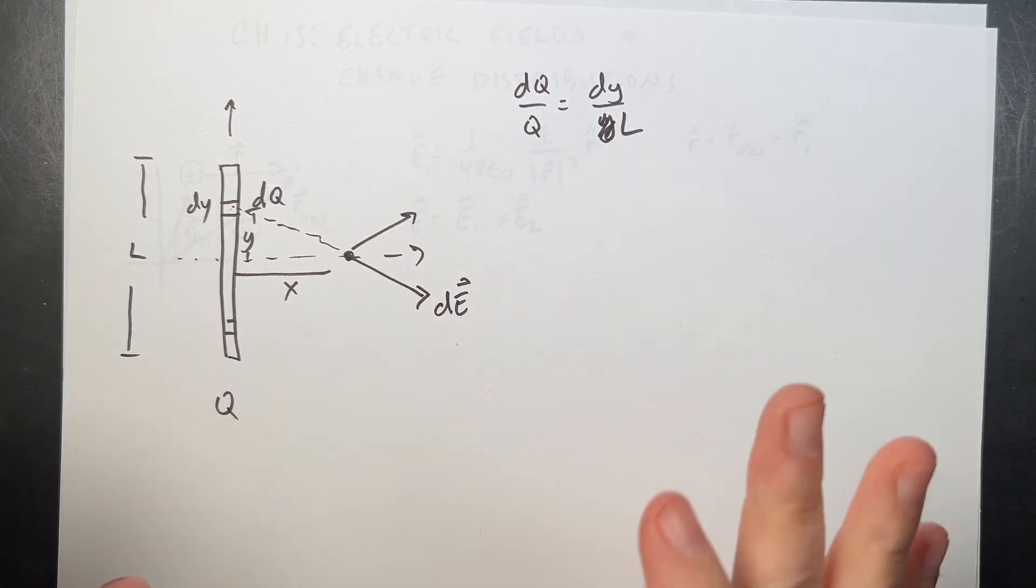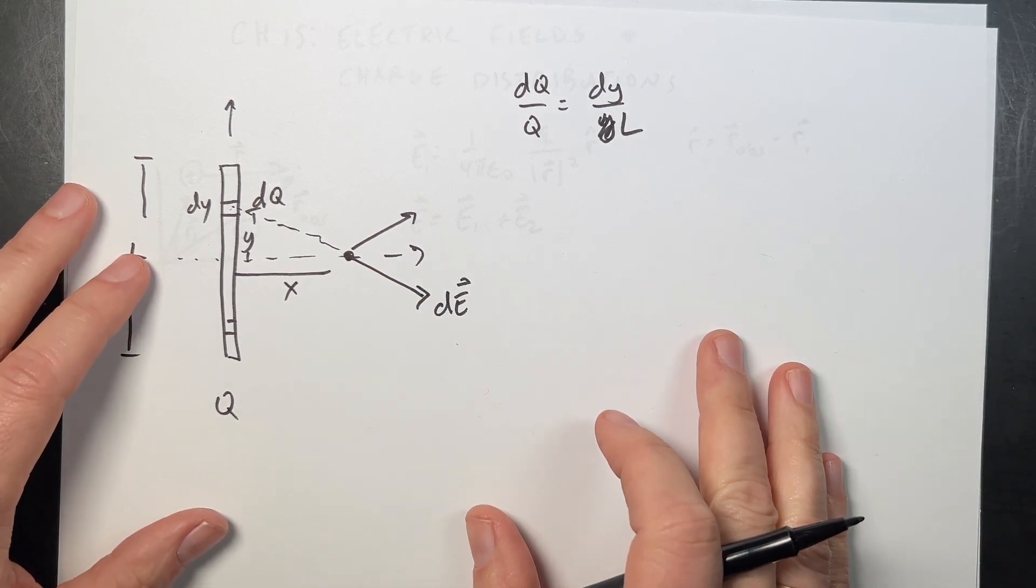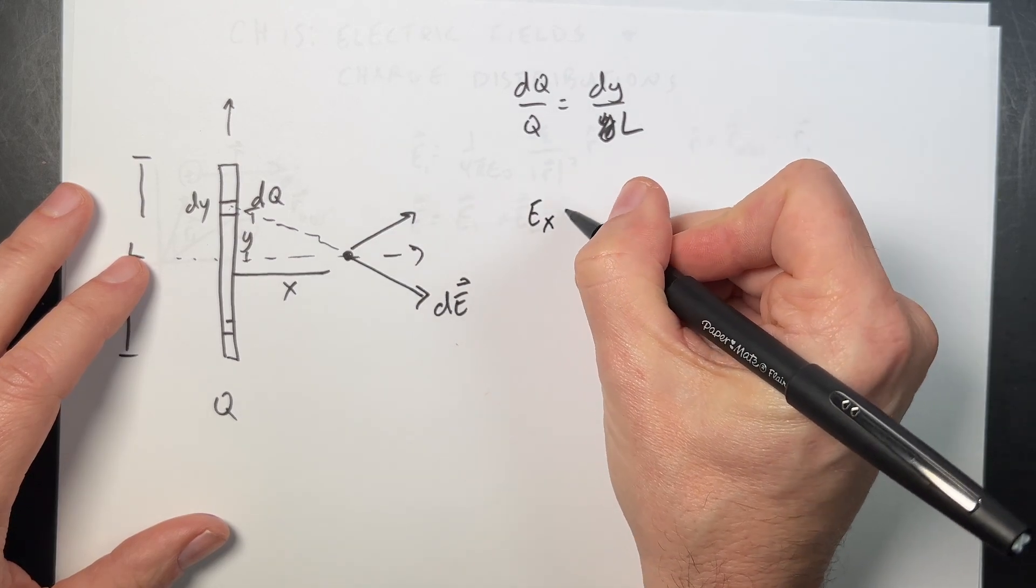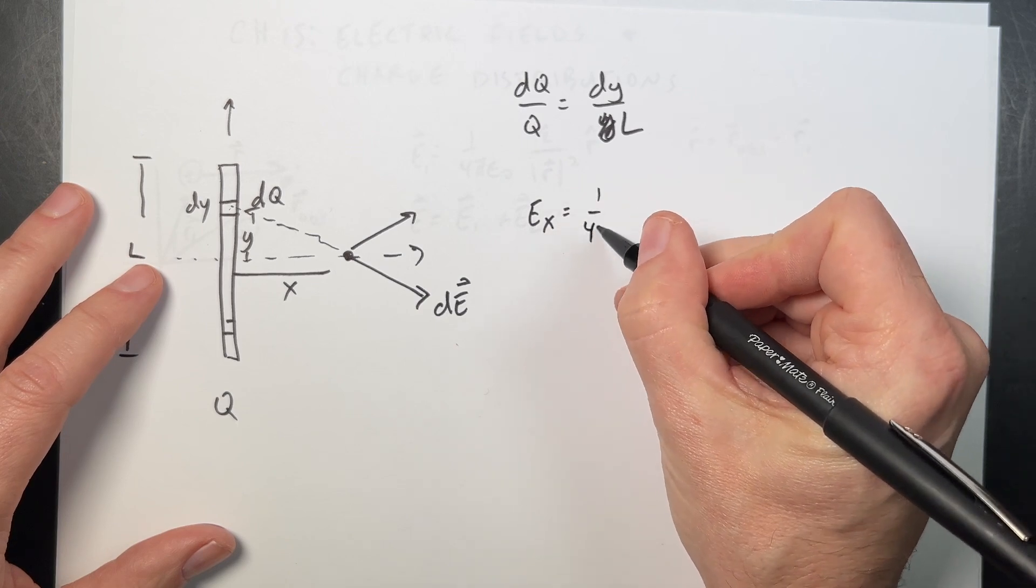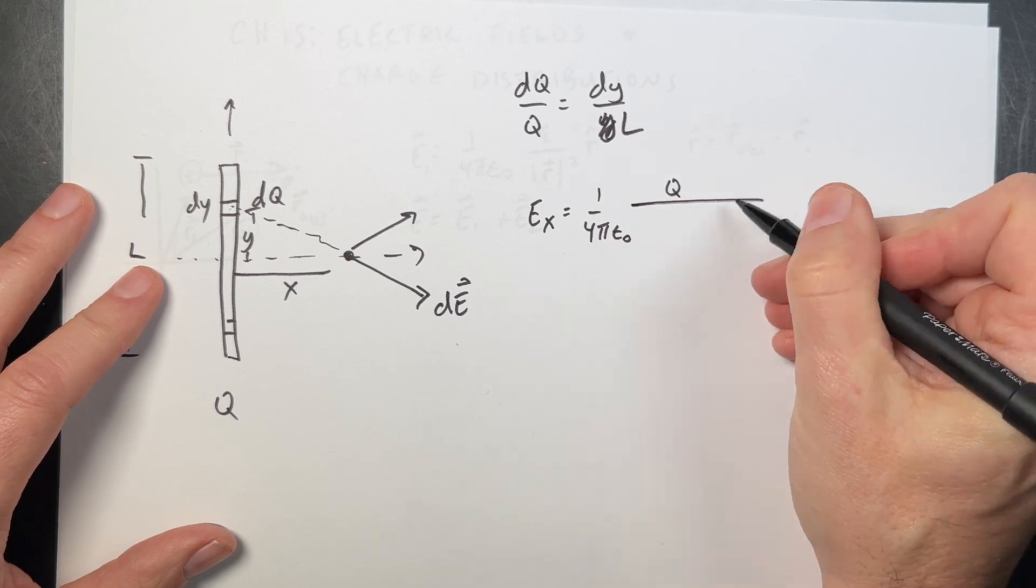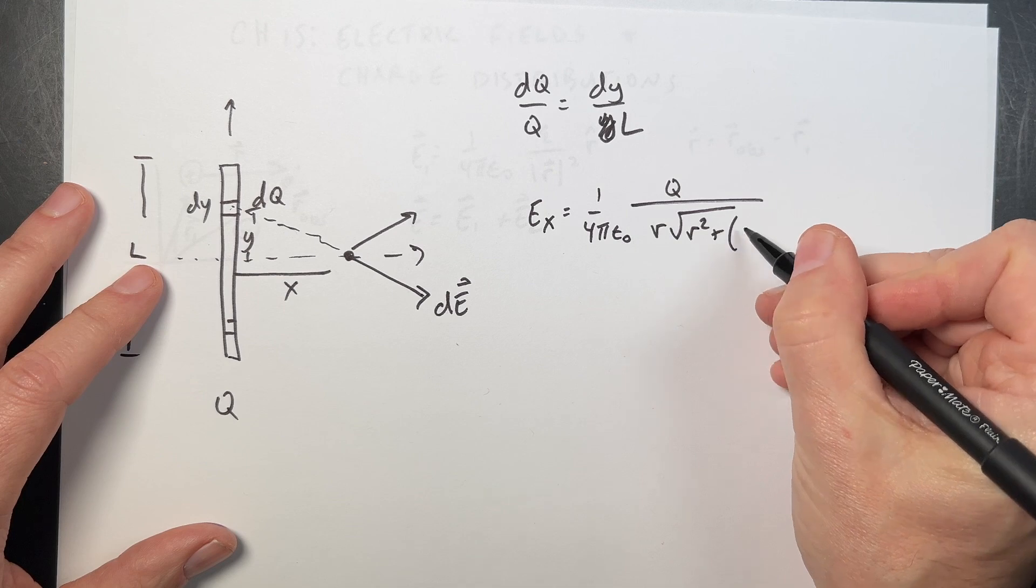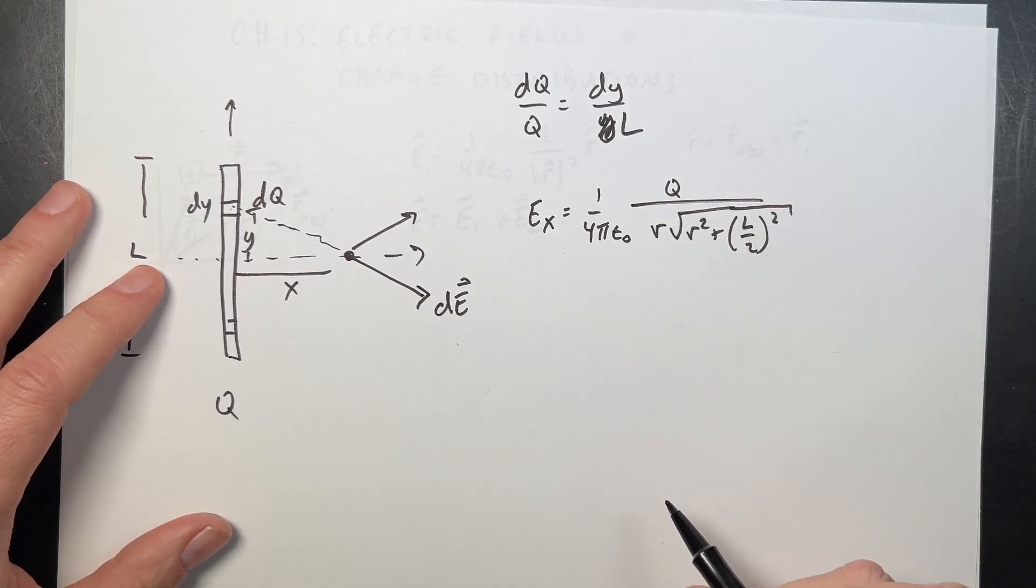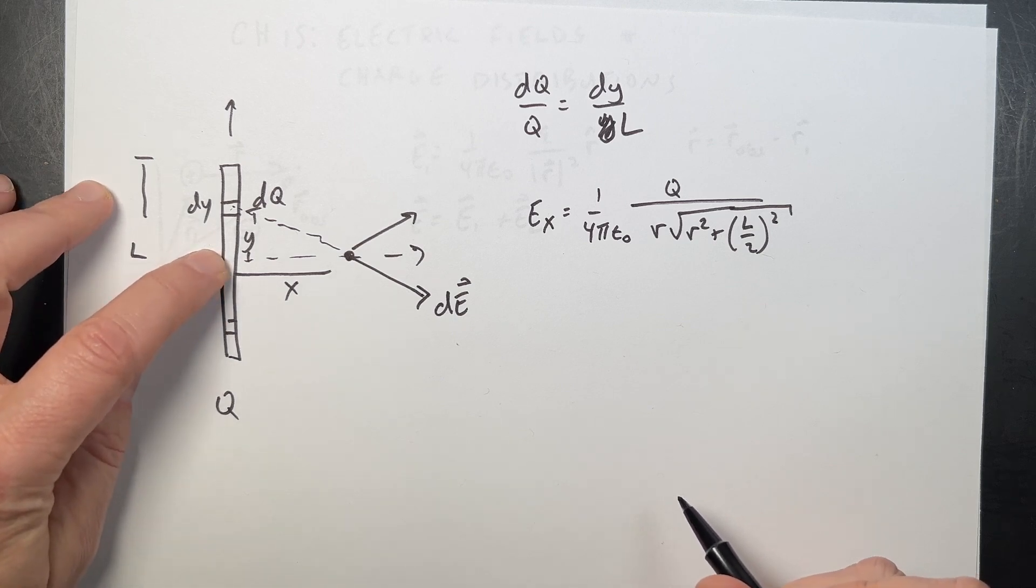And then I need to find these components. There's a bunch of little tricks there. But once you get done with that, I'm going to write down the answer, the magnitude electric field in the X direction. I'll call it EX. This is going to be 1 over 4 pi epsilon naught Q over R times the square root of R squared plus L over 2 quantity squared. That's what you get. That's the X component electric field due to this rod.